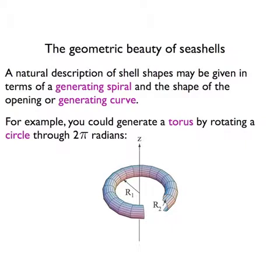So I need to build some ideas to help us create these shapes, relying on geometric notions to start with. The shapes have some sort of twisty aspect and they've got an opening — where you'd look to see the soft tissue of the animal. A natural description of seashell shapes may be given in terms of a generating spiral — this twisty thing — together with the shape of the opening, which I'll call a generating curve. To give you the idea, let's imagine making a torus: take a circle and rotate it around the z-axis. If you go all the way around, a whole 2π radians, you get a closed tube — a torus. That's not a great model of a seashell though — there's no opening to see the soft tissue.